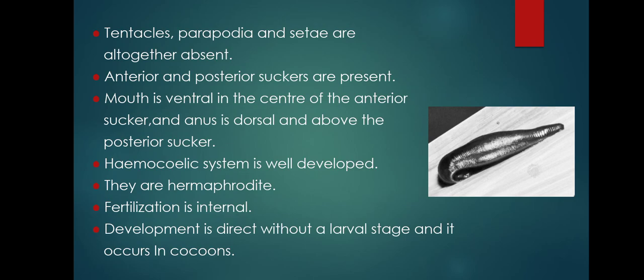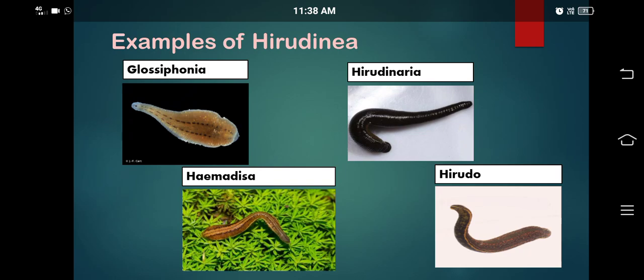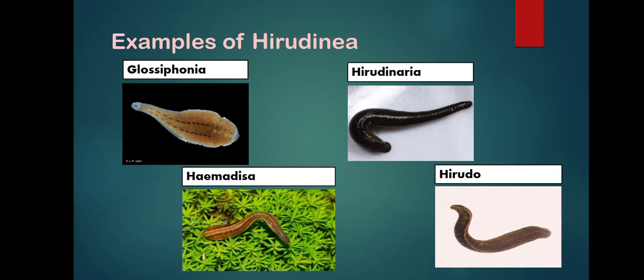Development is direct, without a larval stage, and it occurs in cocoons. The larval stages are absent in leeches. Other examples of Hirudinia include Glossiphonia, Hirudinaria, Haemadipsa, and Hirudo.